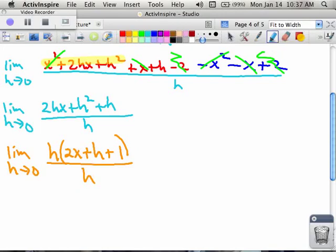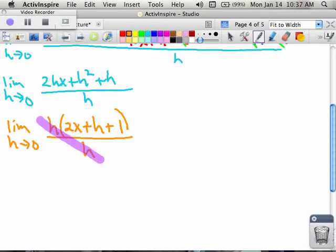The h's, as they have so many times, disappear, because h divided by h is 1. And what I'm left with is the limit, as h is approaching 0, of 2x plus h plus 1. And what this is saying, is that this h now can become 0.